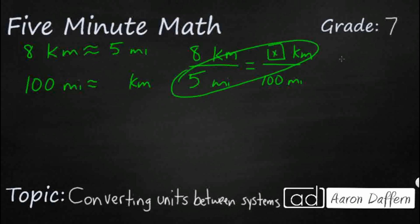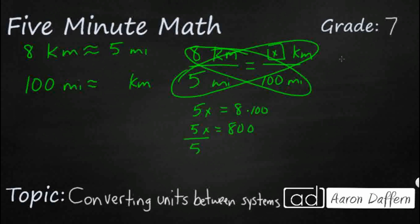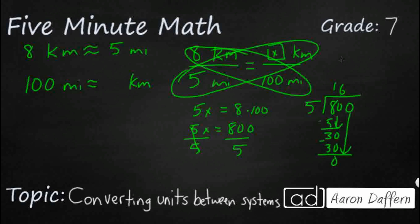Let's do cross multiplication: 5x equals 8 times 100, so 5x equals 800. We divide both sides by 5 to isolate the variable. Let's get 5 into 800: 5 goes into 800 — that's 30, that's 6 — and we get the nice even number 160. So we can say 100 miles is about 160 kilometers.